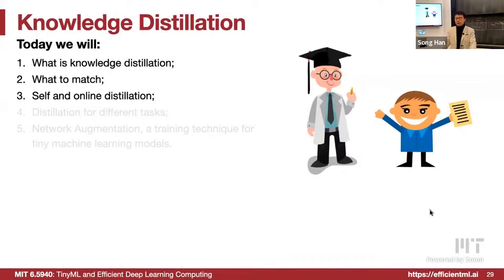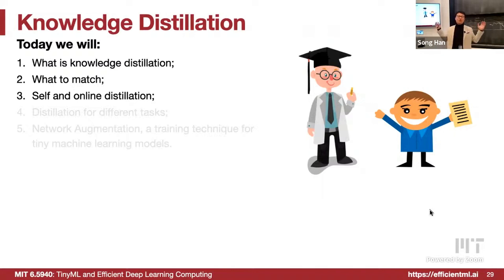That's all for what to match: match the gradient, weight, activation, logits, and across different input samples. For this approach, we have one teacher and one student requiring two models. What's the problem, especially at larger scale? You have to first train a very big teacher model, which is very expensive — like training a LLaMA 70-billion parameter model is pretty costly. If we don't have the teacher, how do we apply knowledge distillation?